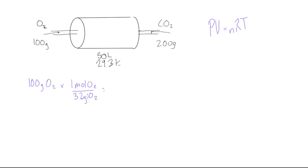And so if we divide 100 by 32, just punch it in your calculator, you get 3.125 moles of oxygen.